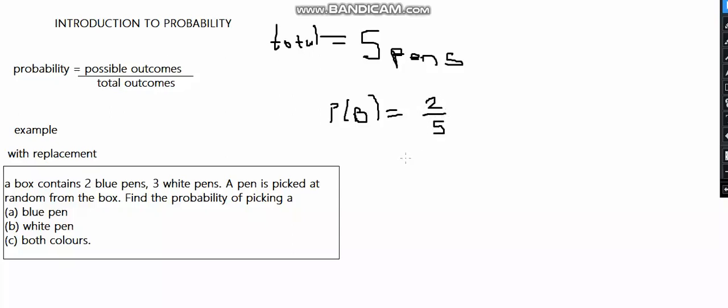For part B, probability of picking a white pen equals possible outcomes for white, which is 3, over 5. So P(white) = 3/5. Make sure if the fraction can be reduced, you reduce it to the lowest form.